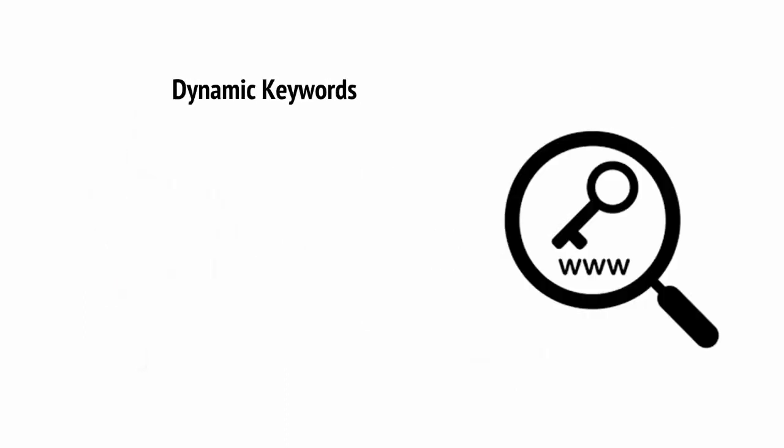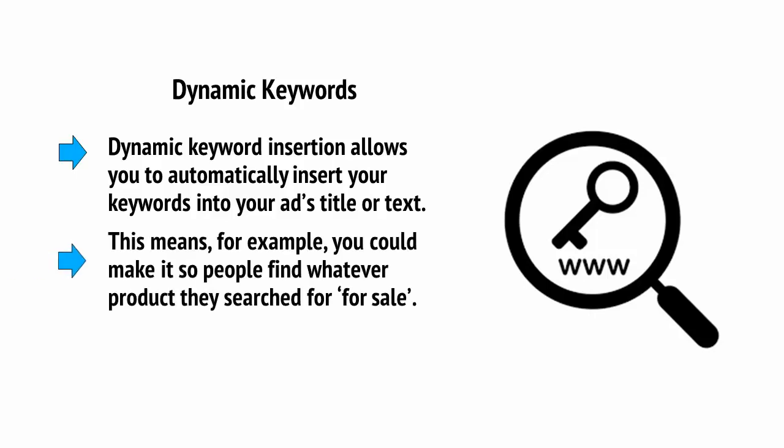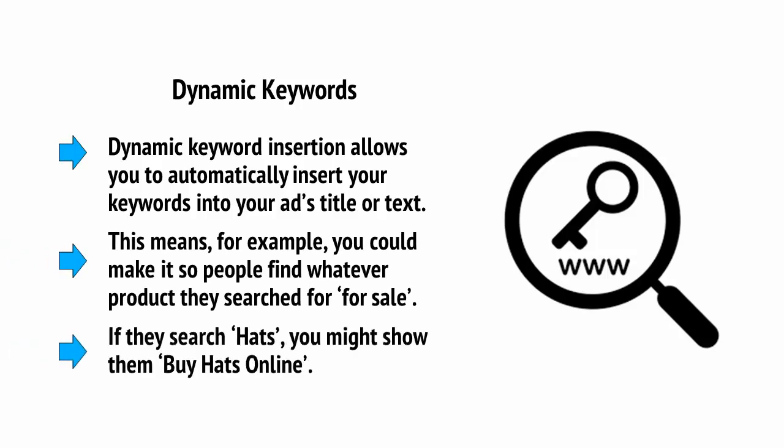Then there are dynamic keywords. Dynamic keyword insertion allows you to automatically insert your keywords into your ad's title or text. This means that, for example, you could make it so people find whatever product they search for listed for sale, or if they search 'hats,' you might show them 'buy hats online.'